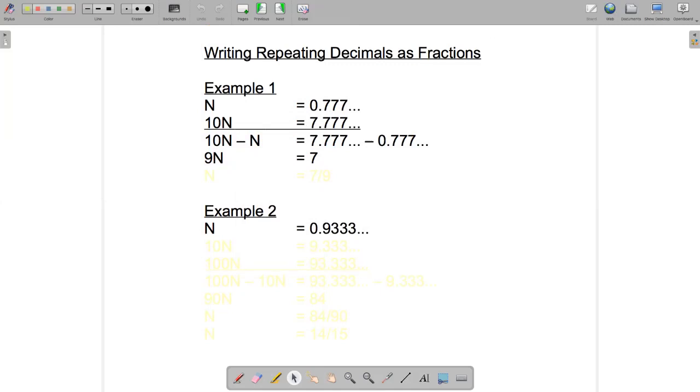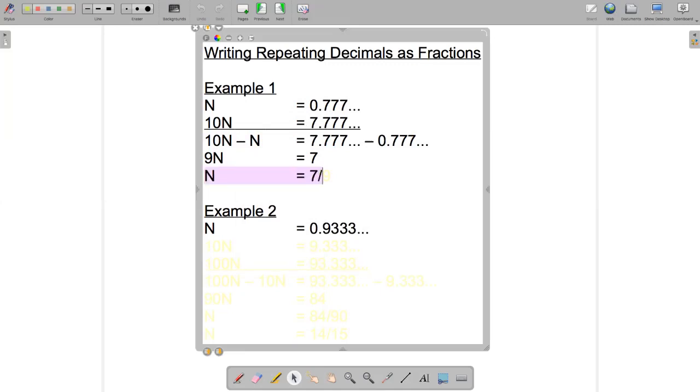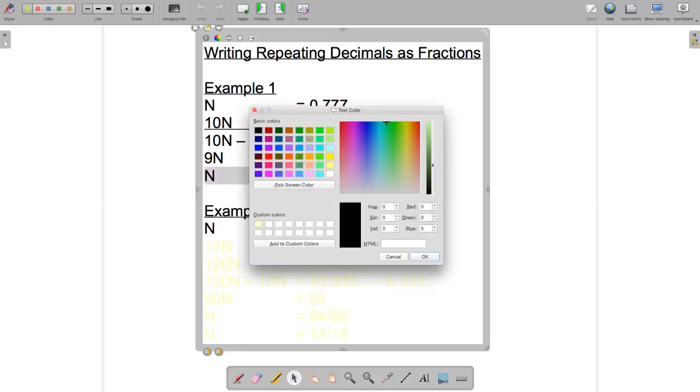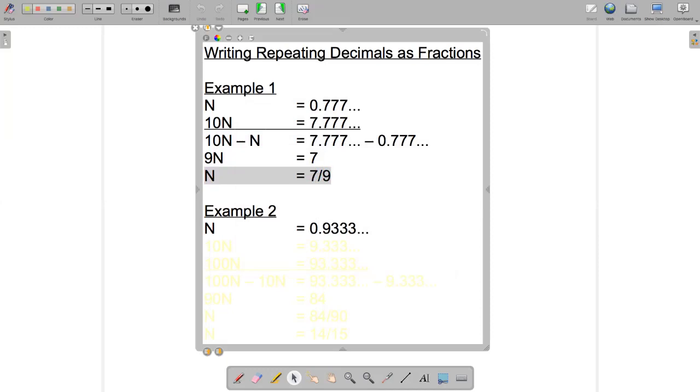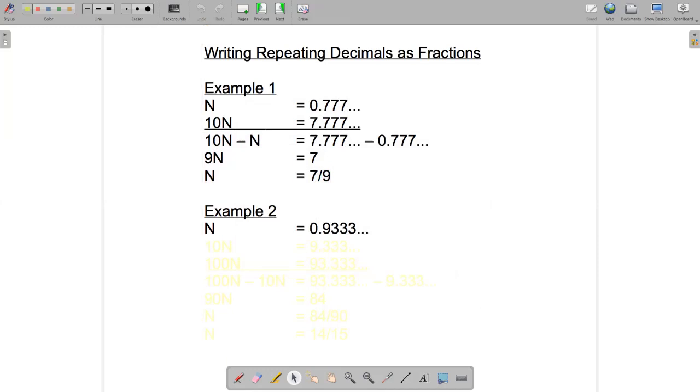because now I can solve that equation. n is 7 divided by 9 and that's the answer we can't simplify that anymore. So n is 7 over 9.